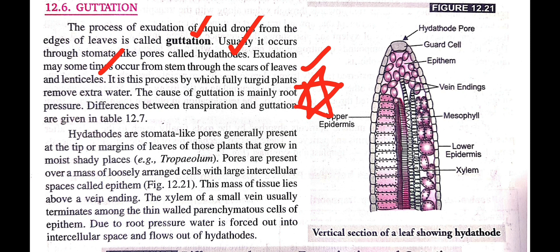Those plants that grow in moist, shady places have pores present over a mass of loosely arranged cells with large intercellular spaces called epithem. This mass of tissue lies above the vein ending. The xylem of a small vein usually terminates among thin-walled parenchymatous cells of epithem. Due to root pressure, water is forced out into the intercellular space and flows out through hydathodes.